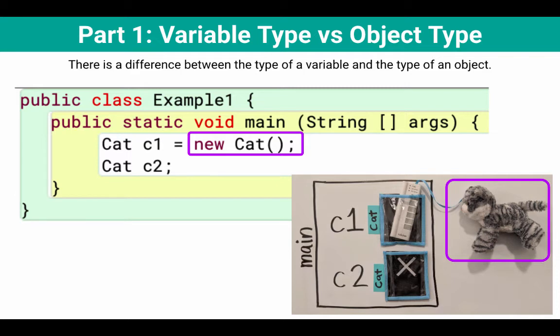And then the last piece of that first line of code is we do the assignment statement, that's that equals. And what that does is that creates a reference to that newly created cat object. So c1 now references that cat object.